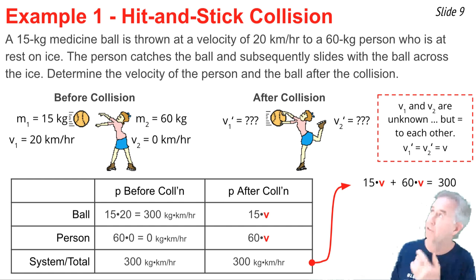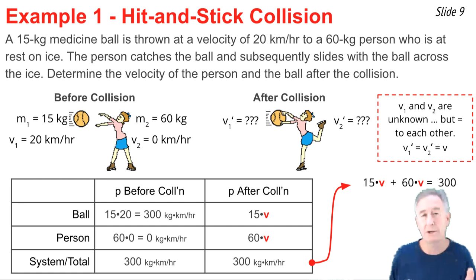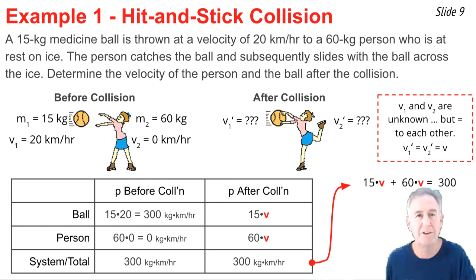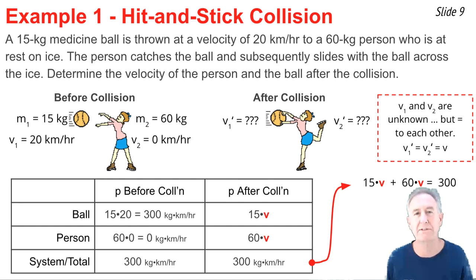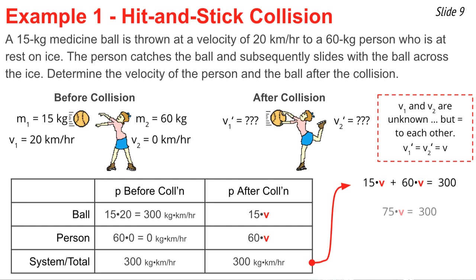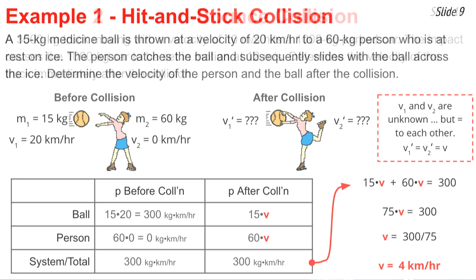Solving for V: combining terms gives 75V = 300. Dividing both sides by 75 gives V = 4 kilometers per hour.